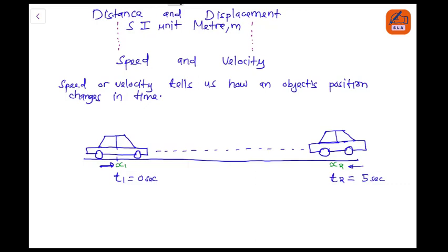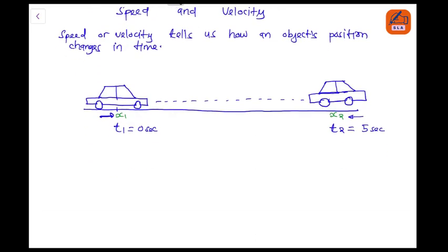So speed and velocity help us understand how much the object's position was changing. The rate at which a body changes its position. The rate at which a body or an object changes its position. So the formula for speed is equal to distance traveled, distance traveled, over time.